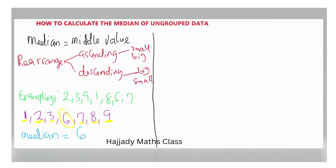So from this, our median is 6. One thing to observe here is that if you look at the number of observations in the data, you will see it is an odd number — count: 1, 2, 3, 4, 5, 6, 7. But in the case of an even number of data points, this is quite different. For even numbers, we make use of the average of the two middle values.